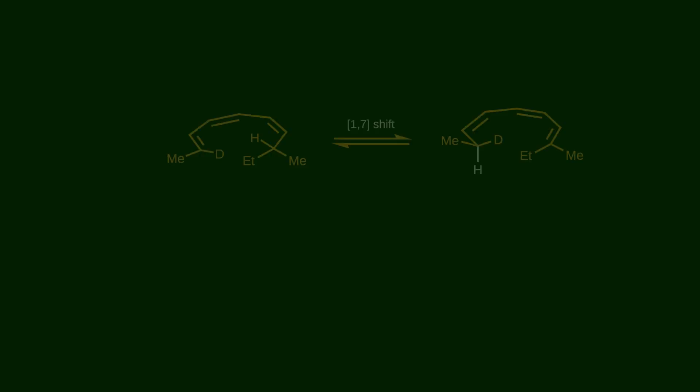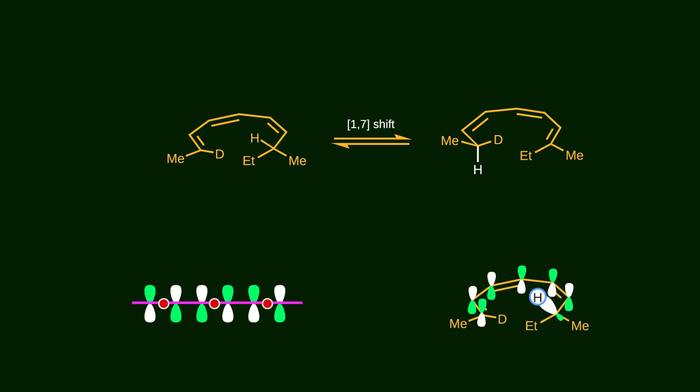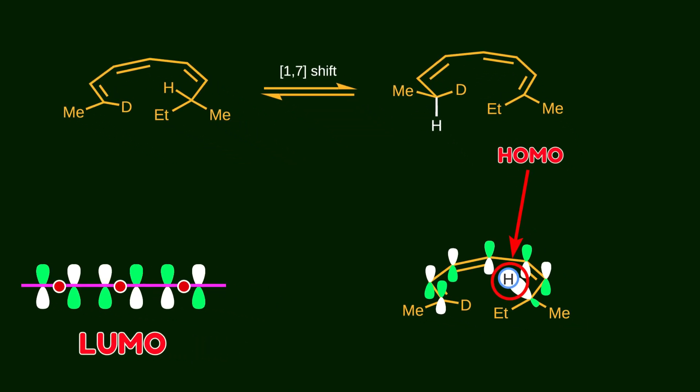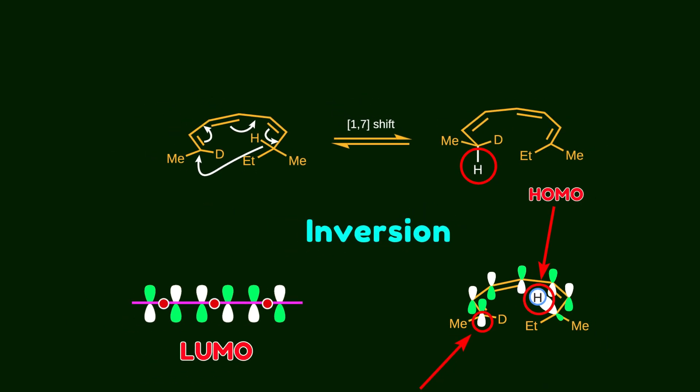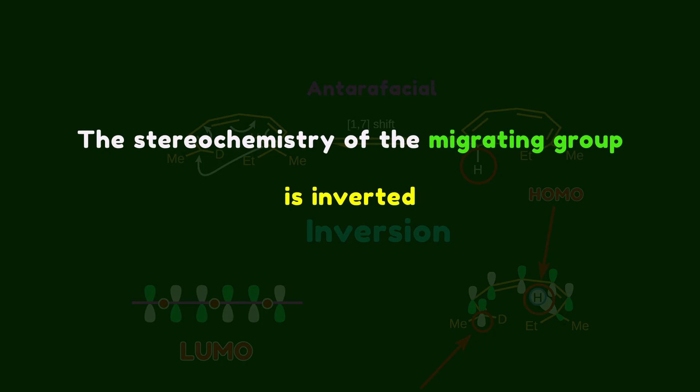Now consider a 1-7 migration. The pi system in this process has three conjugated double bonds. Drawing the molecular orbitals shows that the LUMO orbital contains three nodes, which is one more than in the previous example. As you can see, the HOMO orbital of the carbon-hydrogen bond and the bottom lobe of the P orbital are in the same phase. So the hydride adds to the bottom phase of the pi system. So inversion occurs during this migration. This is known as antarafacial, in which the stereochemistry of the migrating group is inverted.